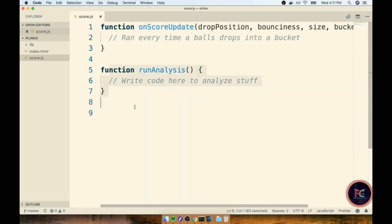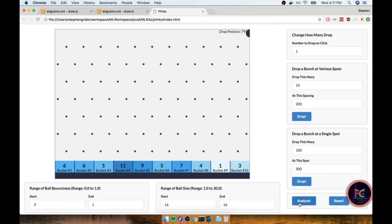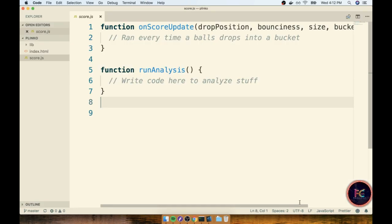You'll also notice there's a second function inside of here called runAnalysis. We're going to add a lot of code to this runAnalysis function eventually. All you need to know right now is that if you click the Analyze button down here, that runAnalysis function will be automatically called. So again I did just a little bit of pre-setup for us just to get us started. Let's take a quick pause right here. When we come back to the next section we're going to write some code into onScoreUpdate and make sure that every single time a ball falls into a bucket we record some information about that ball. So quick pause and I'll see you in just a minute.